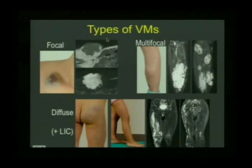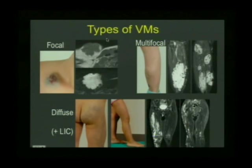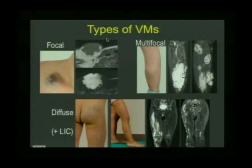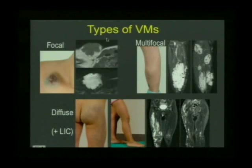The third type is diffuse. You can see an extensive vascular stain in this child's leg. On the T2 MR, much of the muscle in the thigh and subcutaneous tissue is replaced with high signal due to blood pooling within the venous malformation. It is this diffuse group that has associated coagulopathies — specifically localized intravascular coagulopathy, or LIC, within the lesion.